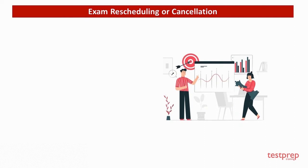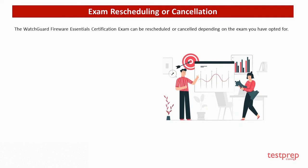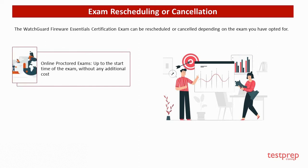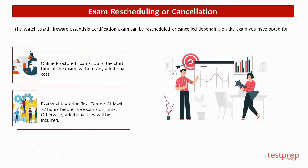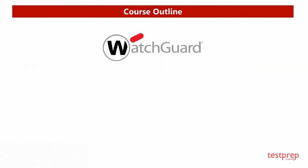Exam Rescheduling or Cancellation. The WatchGuard Fireware Essentials certification exam can be rescheduled or cancelled depending on the exam you have opted for. 1. Online proctored exams: up to the start time of the exam, without any additional cost. 2. Exams at Criterion Test Center: at least 72 hours before the exam start time; otherwise, additional fees will be incurred.